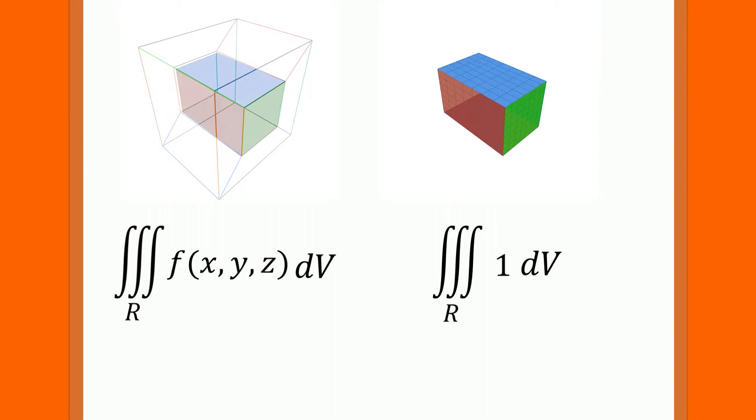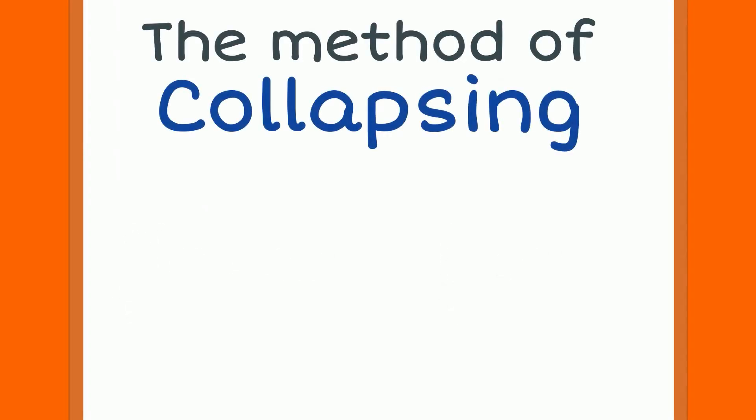This means if we can fully describe the surfaces that make up that region, then we can quickly and easily build the bounds for our triple integral. To do this, we can use the method of collapsing.